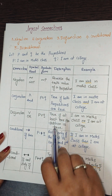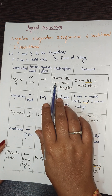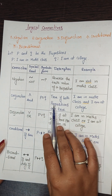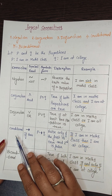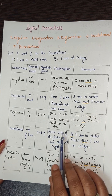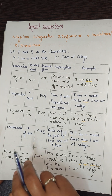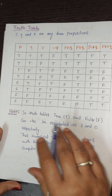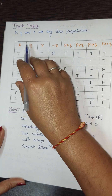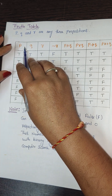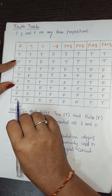Now we will see the truth table. For three propositions p, q, r, if you are taking three propositions, you write p with four T's and four F's, q with two T's then two F's repeated, and r with alternating T F T F T F T F, giving eight rows total.